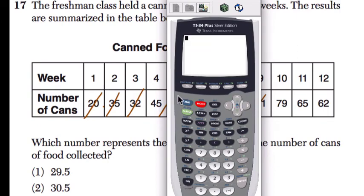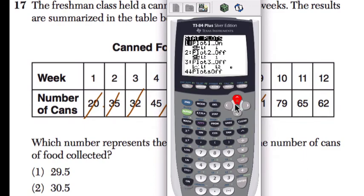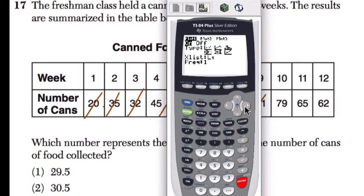Now once this is all set up on your list, you can just hit second, stat plot up here. And there are different plots. Since we're only plotting one group of data right here, make sure only one of these are on. The other should be off. If you need to turn any on or off, you can scroll up or down. And once you hit enter, the first feature is to turn on or off. So we want one of them on here because we want to graph at least one list or group of data.